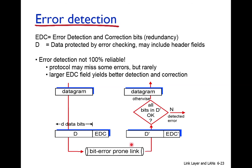The data along with the error detection code is sent to the receiver. The receiver recomputes the error detection code for the received data and compares it. If there is an error that can be corrected, it is corrected and the data is passed to the upper layer. If the error is detected but cannot be corrected, the packet is lost.